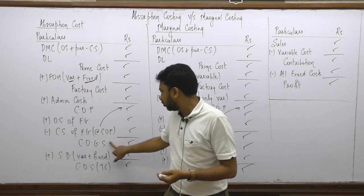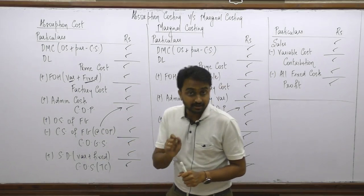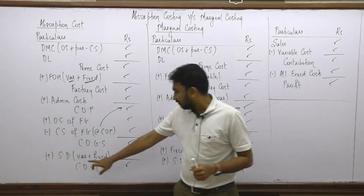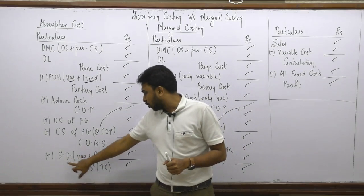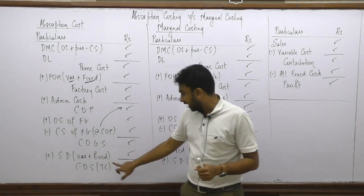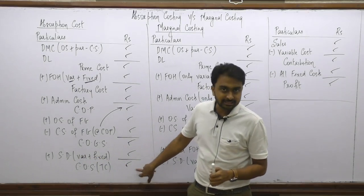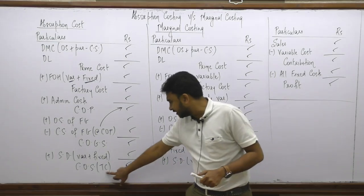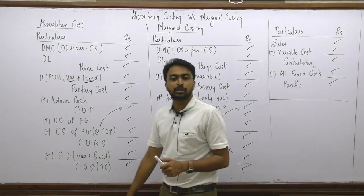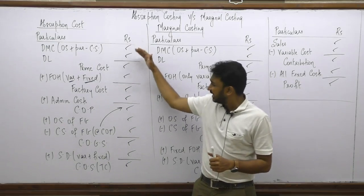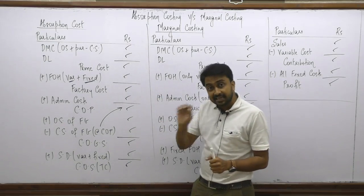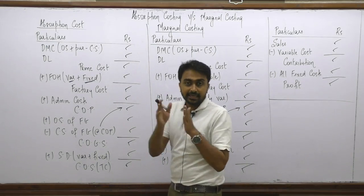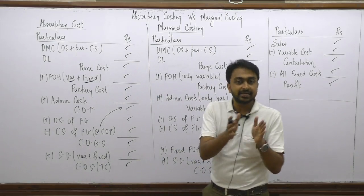Once we get cost of goods sold, the only remaining cost is selling cost. Adding selling cost — both variable and fixed — gives us cost of sales, which equals total cost. This is the basic absorption costing cost sheet format that you would have covered at the inter CA stage.